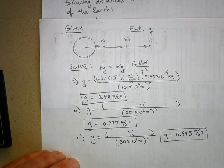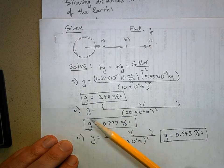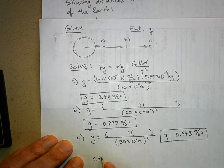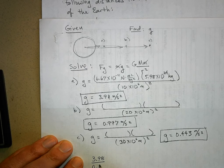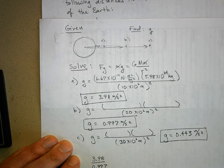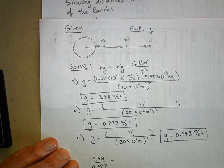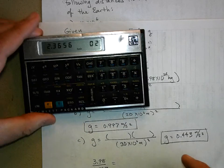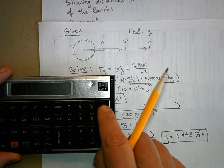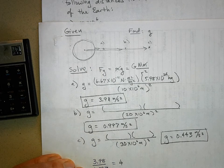Now let's take a look at a pattern here. Let's take this gravity and divide it by this one: take 3.98 and divide it by 0.997. The units are going to cancel out. What is this fraction? It's 3.98 divided by 0.997, which equals about 4.